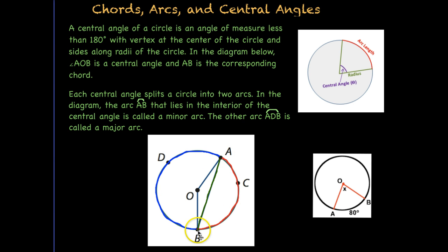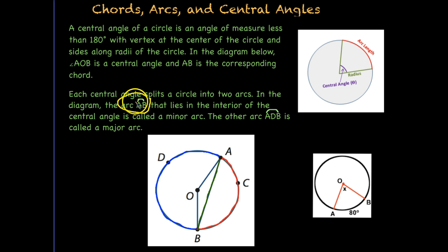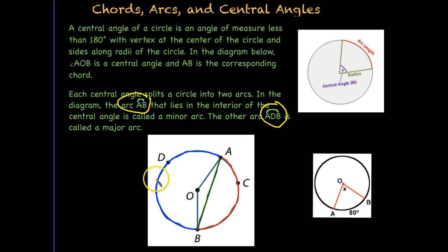We also have arcs that are intercepted by our central angle. This first arc, AB, is a minor arc. It lies on the interior of the central angle. Arc AB is usually notated by two letters if it's a minor arc, less than 180 degrees, with a little minor arc notation over the top. We also have a major arc in blue, and we usually notate that with three letters so that we know it's greater than 180 degrees. It's a major arc, ADB.